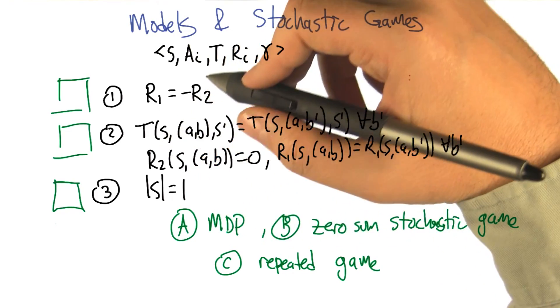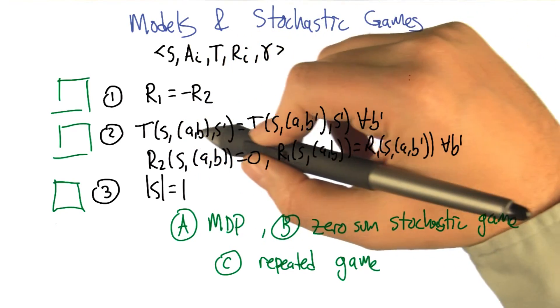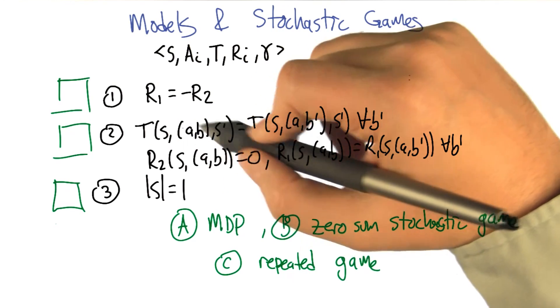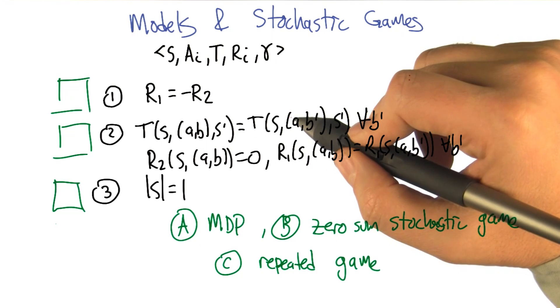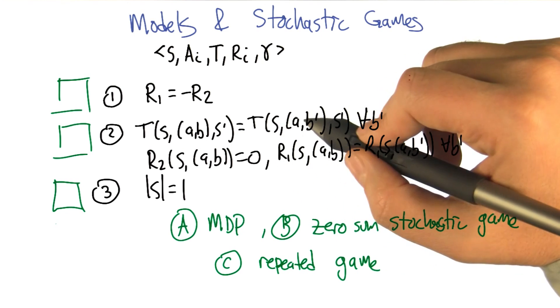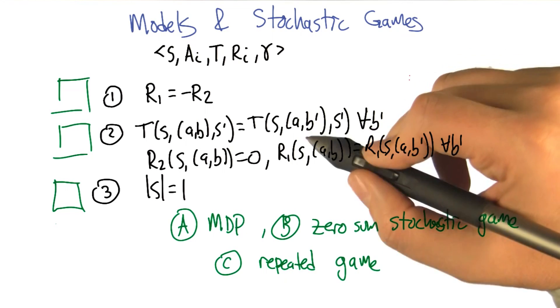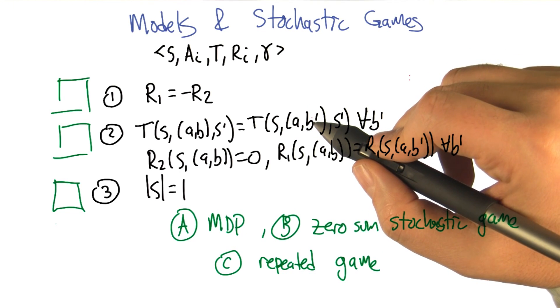The next one says that the transition function has the property that for any state and joint action and next state, that's going to be equal to the transition probability for state, joint action, next state, where we've changed potentially the choice of action for player two.